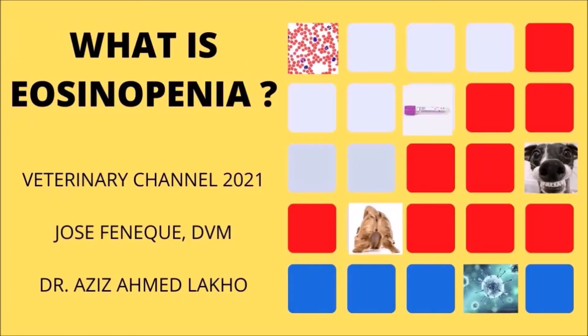The following short presentation provides a quick definition of the hematological condition in pets known as eosinopenia. This is part of our series where we provide the definition of selected hematological terms to veterinary students. This presentation can serve as a review for veterinary students studying for the NAVLE or the ECFVG certification.